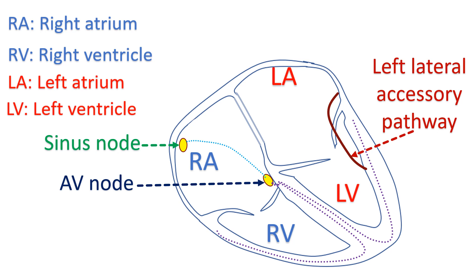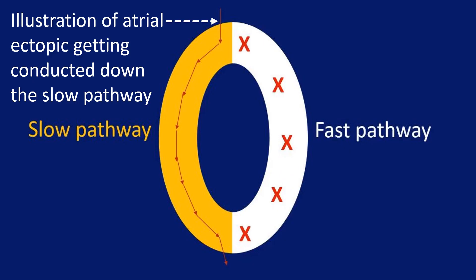Adenosine usually has no effect on accessory pathways except for atrio-fascicular pathways and permanent junctional reciprocating tachycardia. AVNRT depends on dual AV nodal pathways — the slow pathway and the fast pathway — for the reentrant circuit.